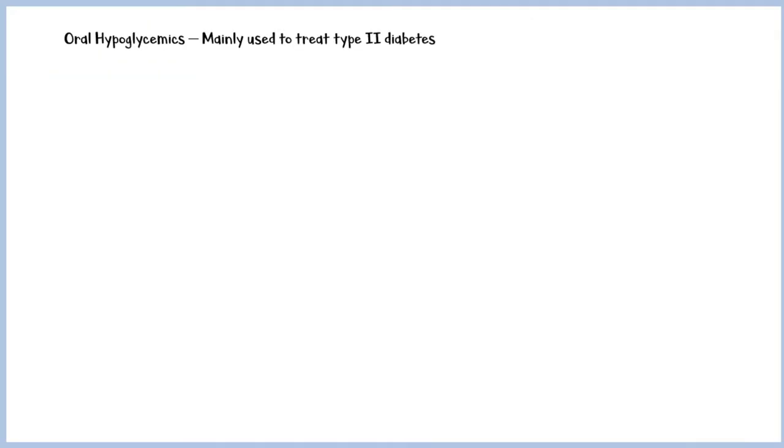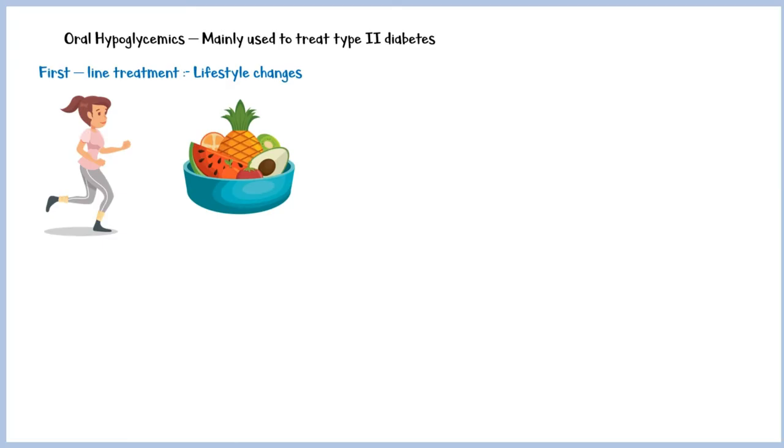Oral hypoglycemics are mainly used in the treatment of type 2 diabetes. However, the first-line treatment of type 2 diabetes is lifestyle changes such as regular exercising and dietary modifications. If these interventions fail to lower the blood glucose levels, then the patient will be started on oral hypoglycemic agents.